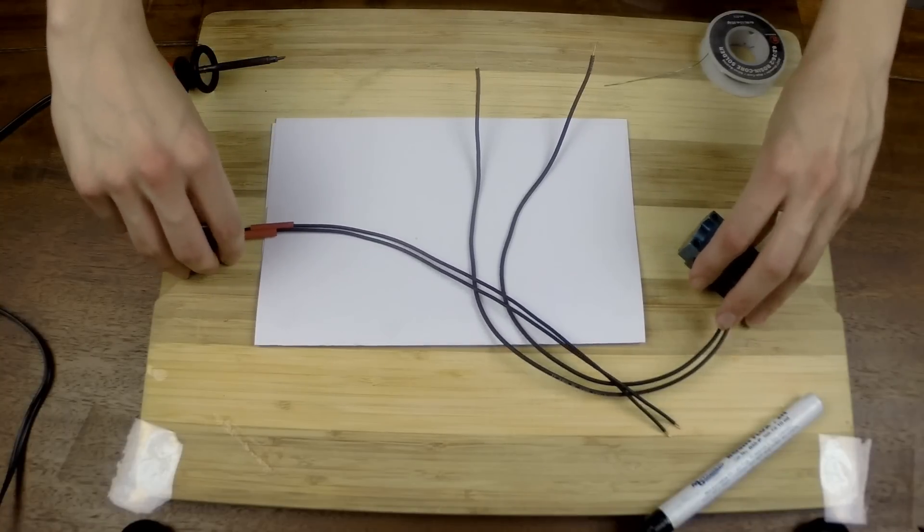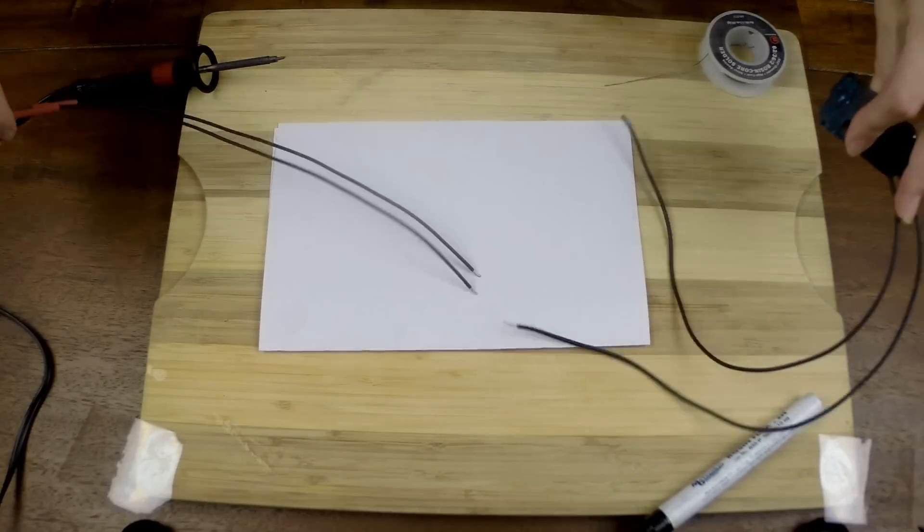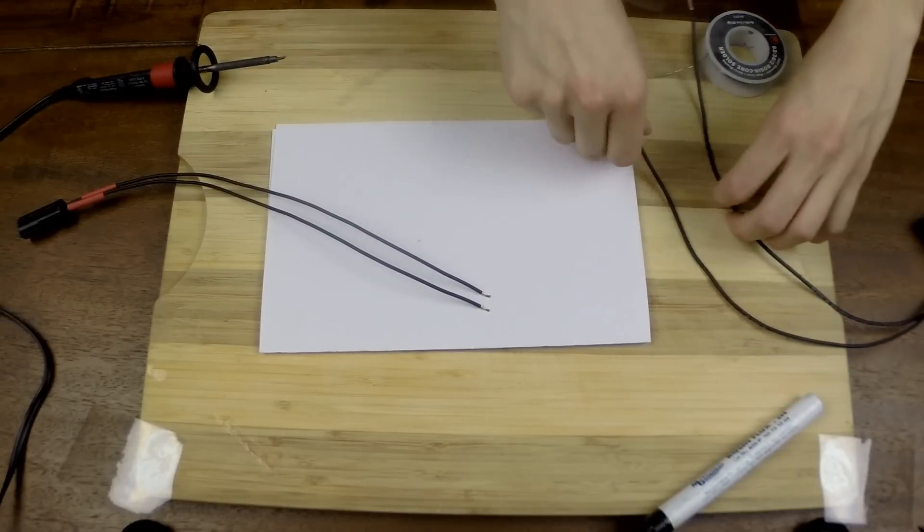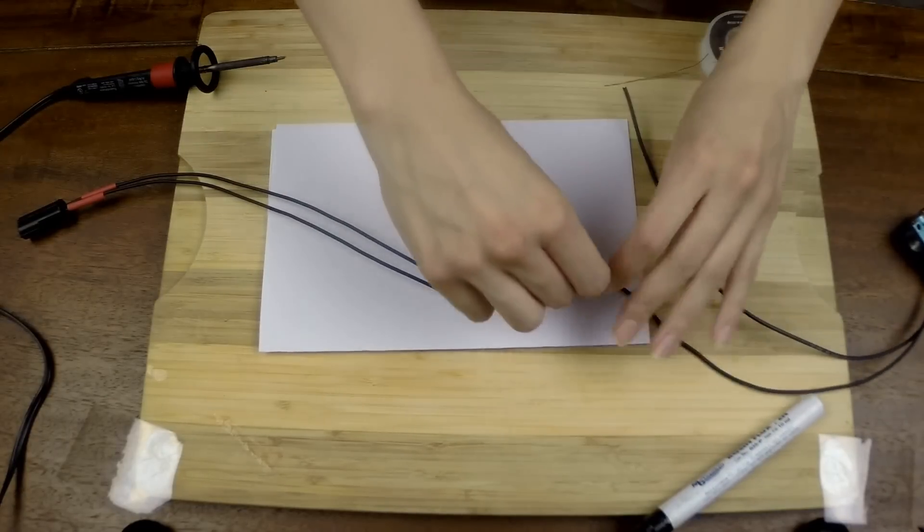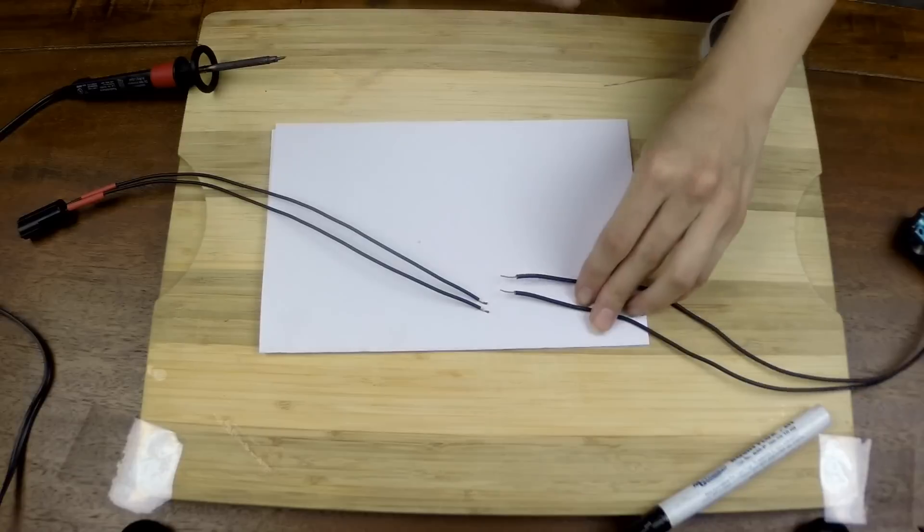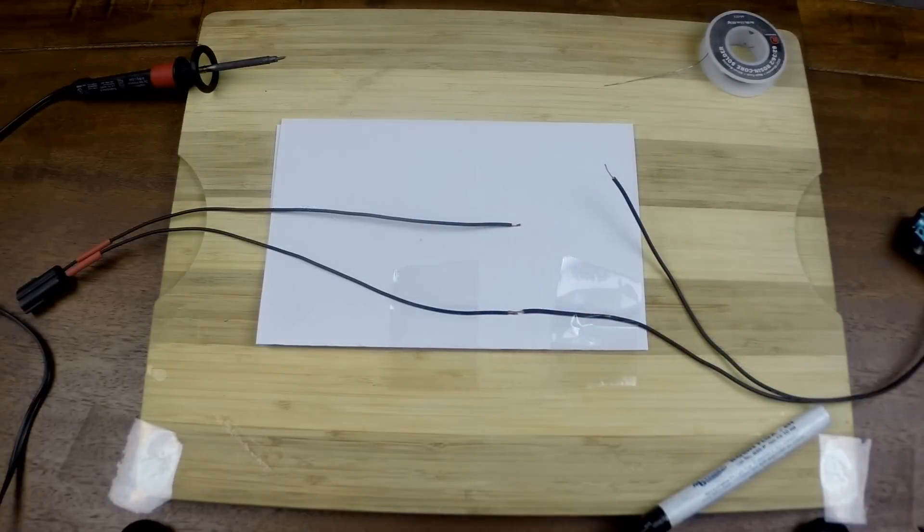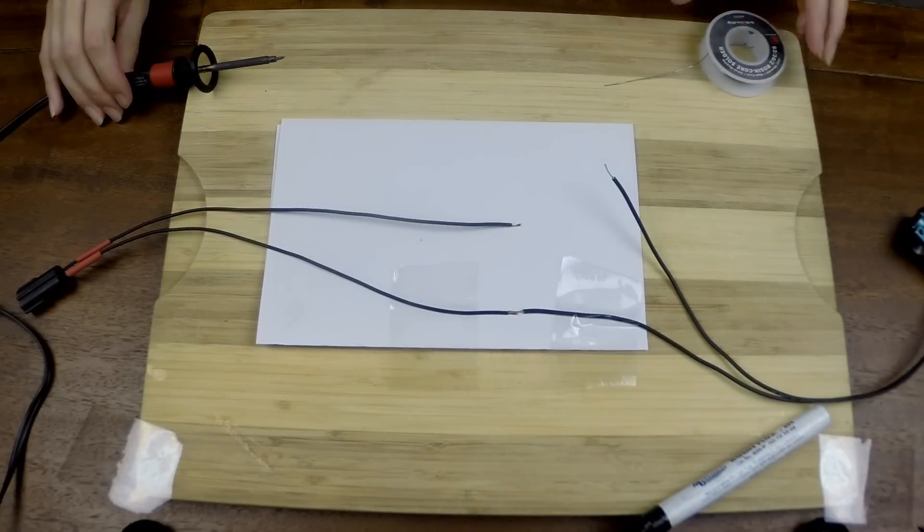Now that the heat shrink is in place it's time to solder the wiring harness to the solenoid. As you can see in this clip I'm taping down the wires so that I may have an easier time soldering the two connections together.